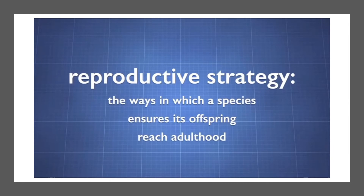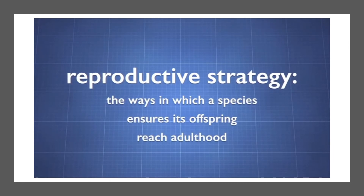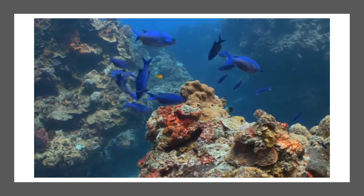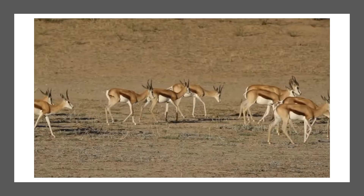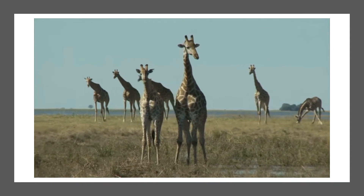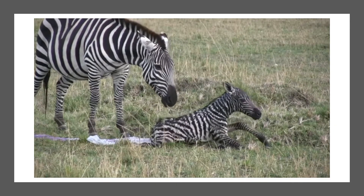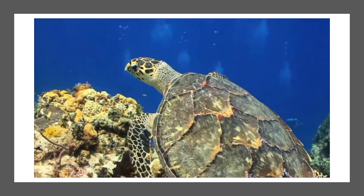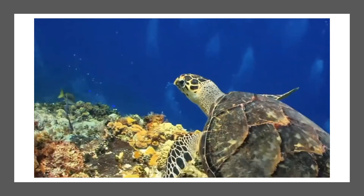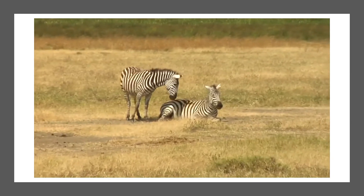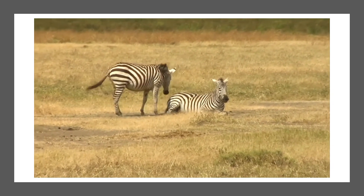Reproductive strategy refers to the ways in which a species ensures its offspring reach adulthood. The reproductive strategy evolves to maximize the number of offspring that reach maturity and reproduce. For example, zebras have a gestation period of about a year and produce a single foal that can live up to 40 years, while female sea turtles lay 50 to 200 eggs, cover the hole, and retreat to the ocean hoping that at least one egg survives to adulthood.